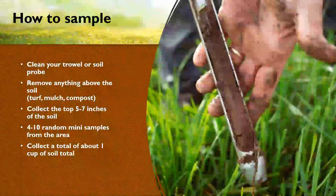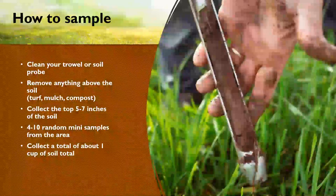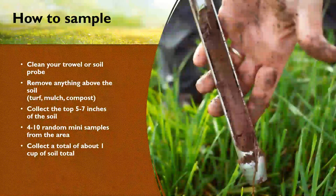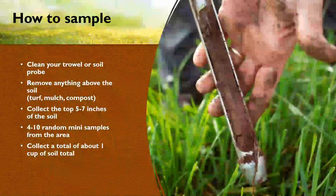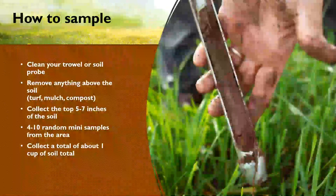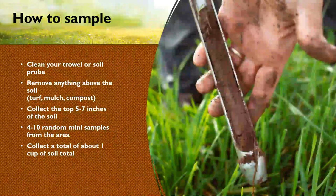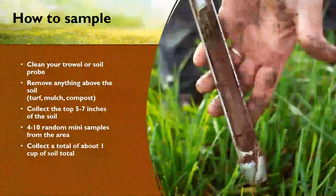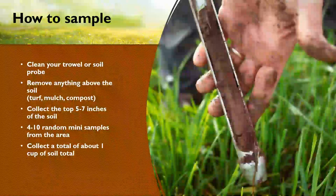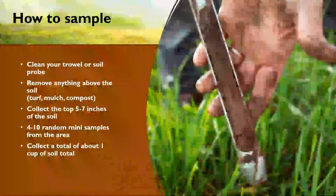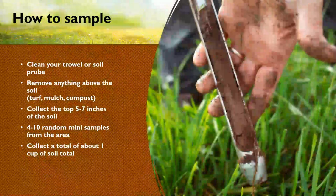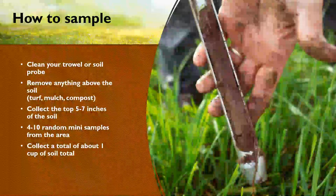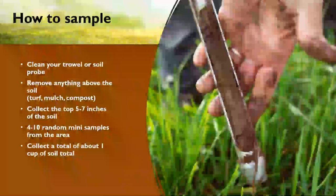Remove anything above the soil from your sample — turf, mulch, thatch, bugs, compost. Don't spread compost all over your grass and then take a soil sample because that will skew your results. Collect your samples from the top five to seven inches, and do four to ten random mini-samples from that area. Each mini-sample should still be five to seven inches deep. You need at least about one cup of soil total, which we'll talk about in the next slide.